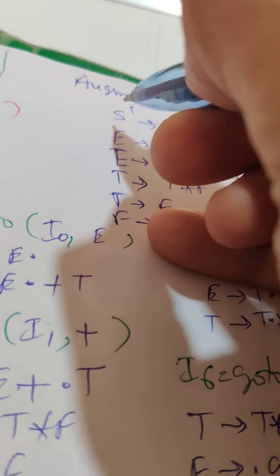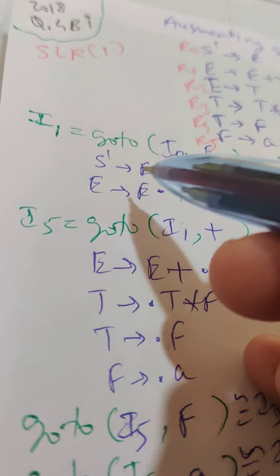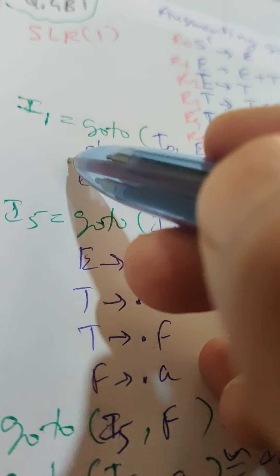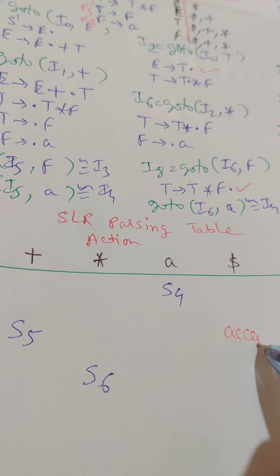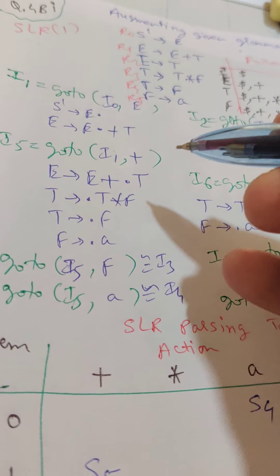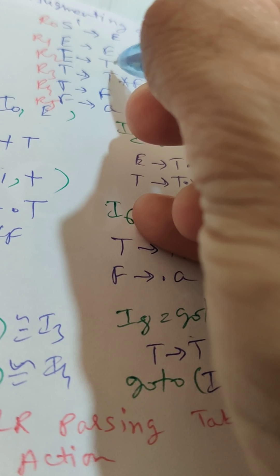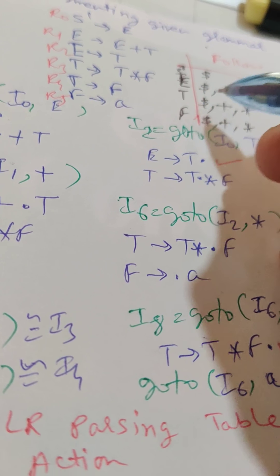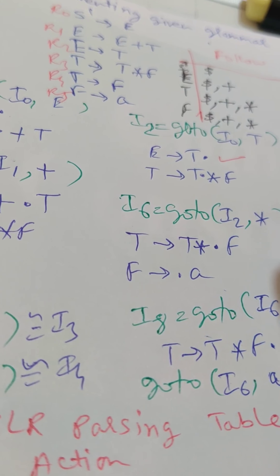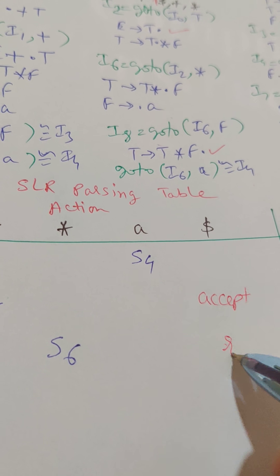Let's number the grammar rules: rule 0 is S' → E, rule 1 is E → E+T, rule 2 is E → T, rule 3 is T → T*F, rule 4 is T → F, rule 5 is F → a. I1 on dollar gets accept (since S' → E finishes there and FOLLOW(S') = {$}). I2 has E → T finished — rule 2 — so on FOLLOW(E) = {$, +} we place R2.